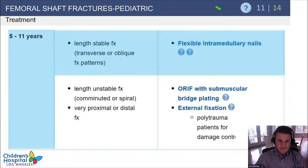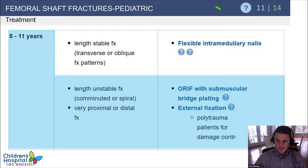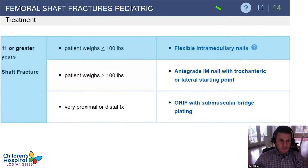In patients 5 to 11 years of age with length stable fractures — transverse or oblique — utilize a flexible nail. For length unstable fractures in the same age group, meaning comminuted or long spiral, fracture length more than twice the bone diameter, or very proximal or very distal fractures, think about submuscular plates. External fixators are good options for polytrauma patients for damage control.